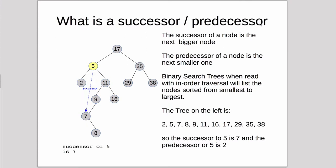The predecessor is the next node less than the node you're at. So the predecessor of 29 would be 17, up here. And the predecessor of 16 would be 11. And so there's the concept of the previous value in the tree.